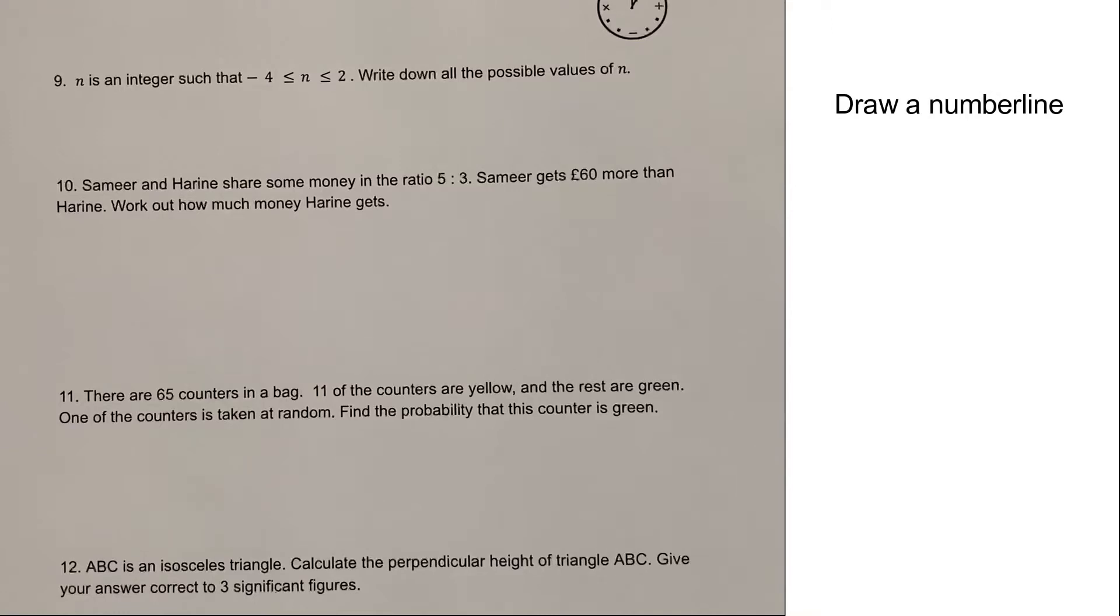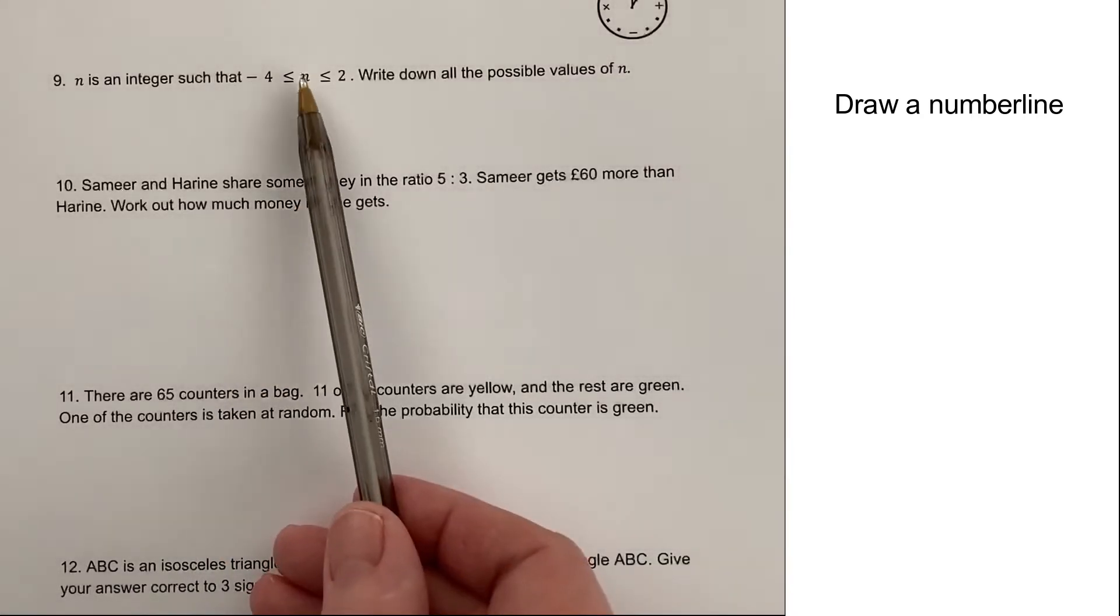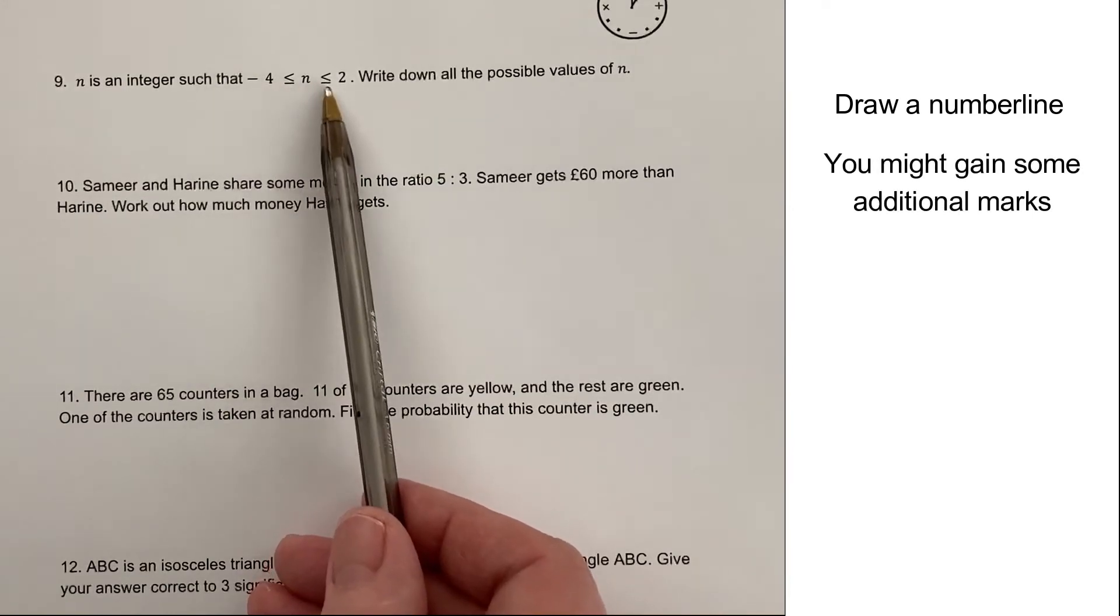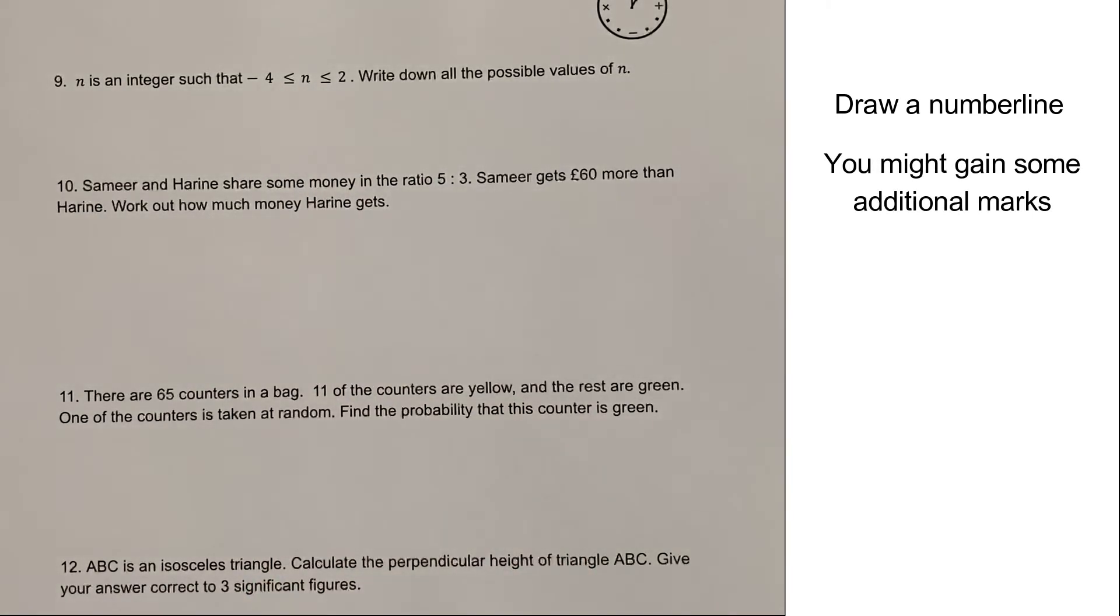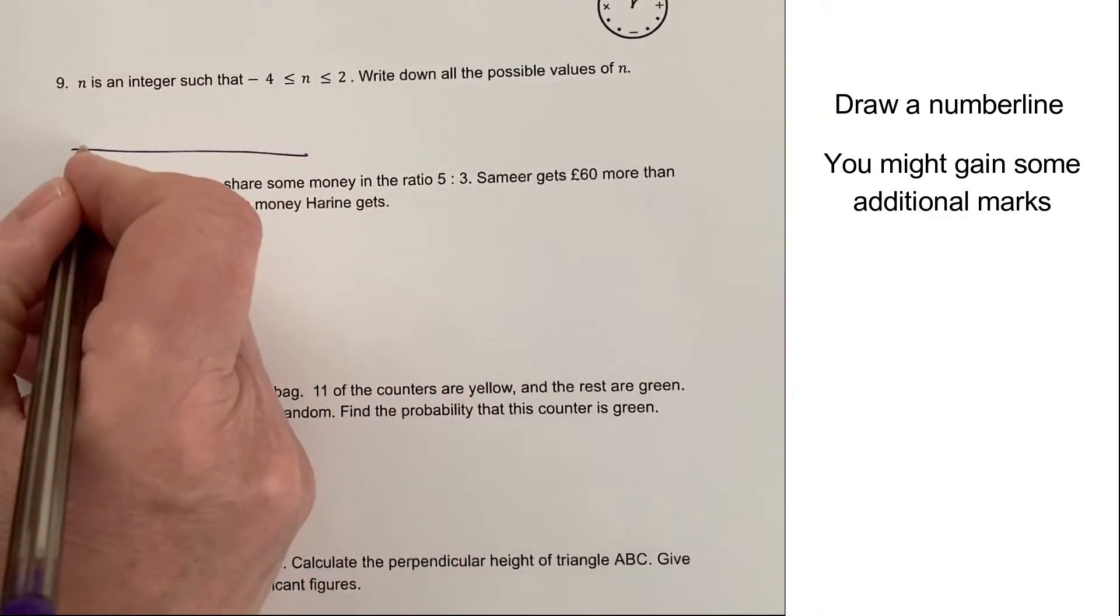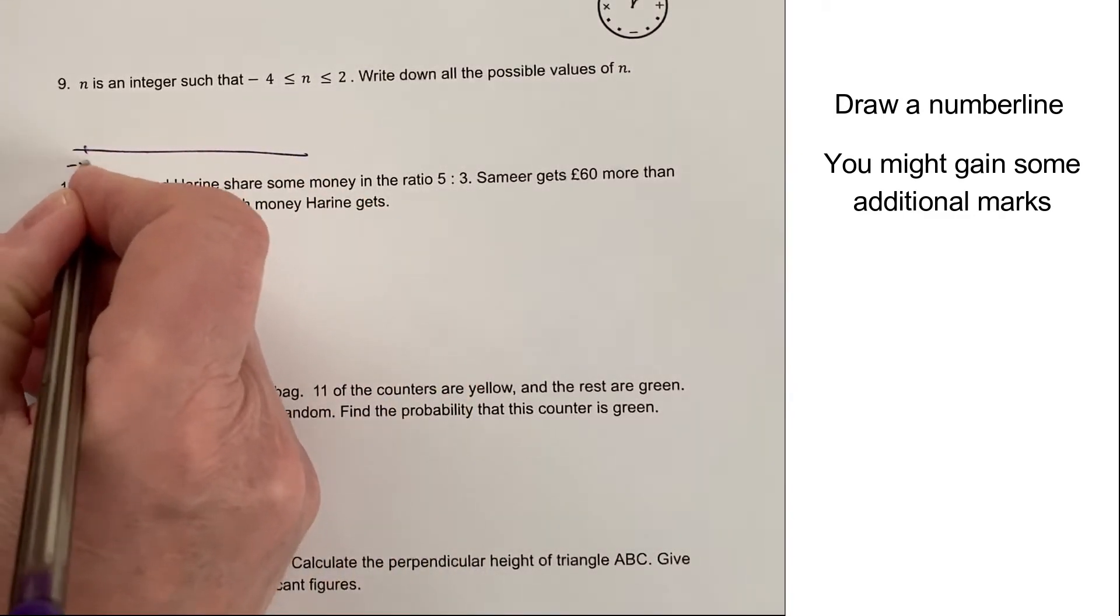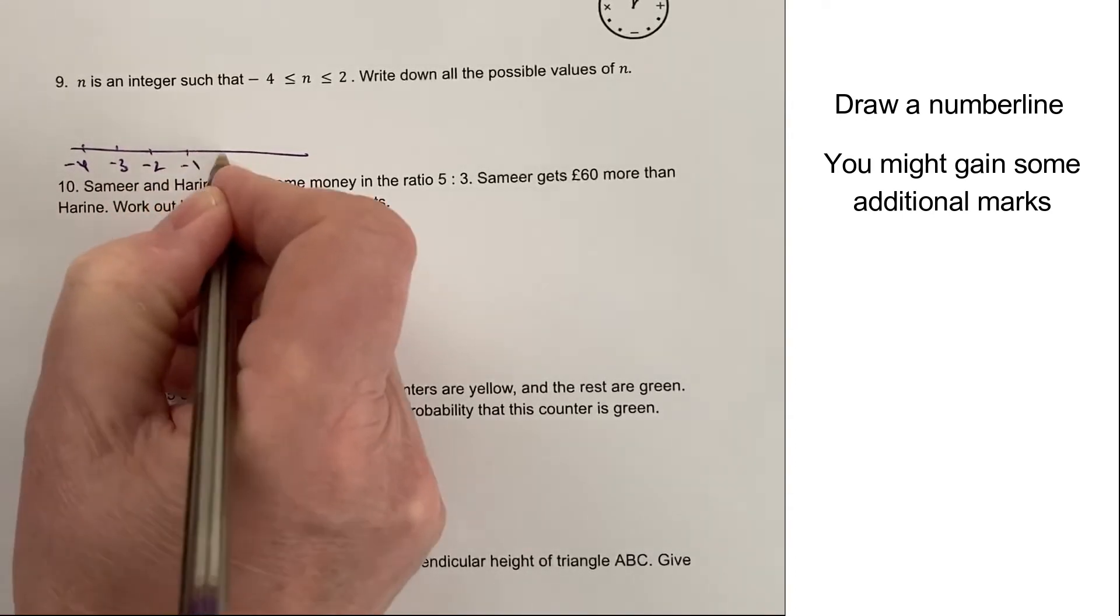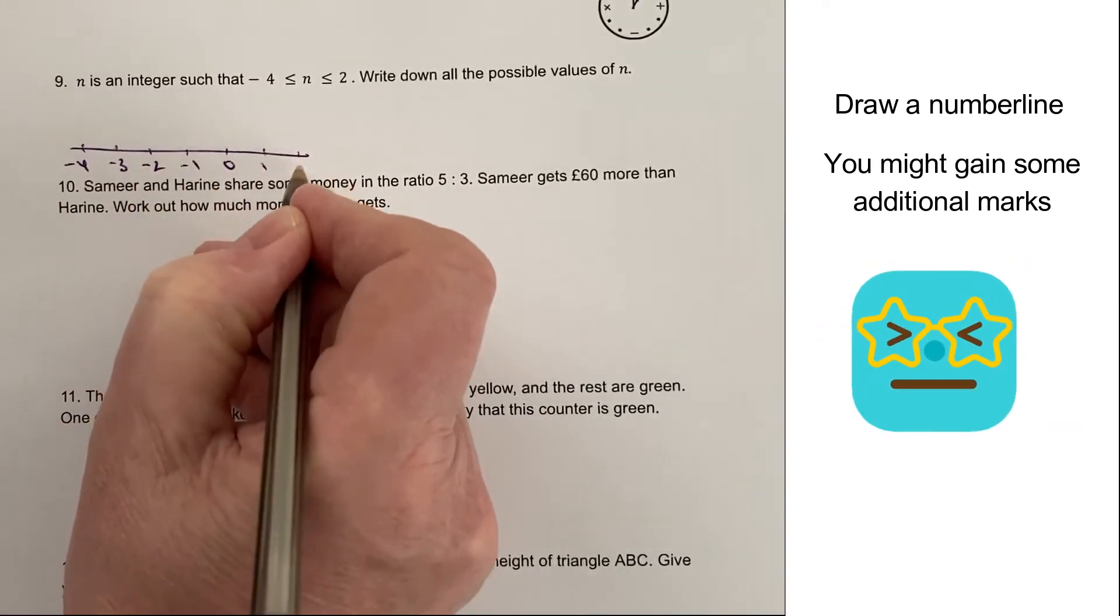The next one is n is an integer. So in other words, n is a whole number such that it appears to be on a number line greater than or equal to minus four, less than or equal to two. So actually, I could, if I wanted to, just draw a very brief, very quick number line. That's minus four, minus three, minus two, minus one, zero, one, and two.